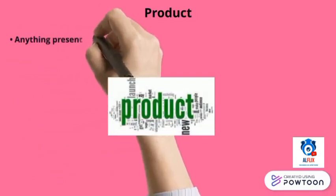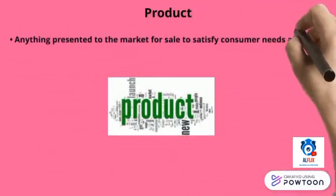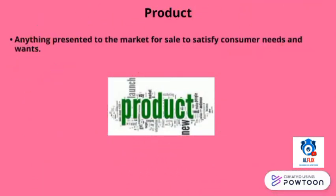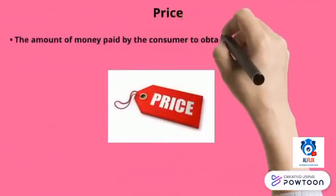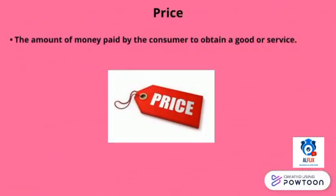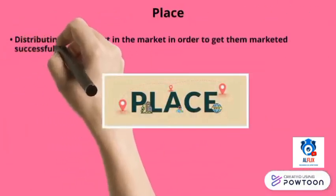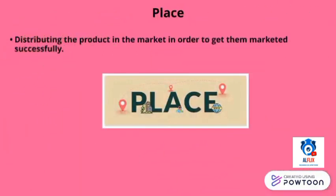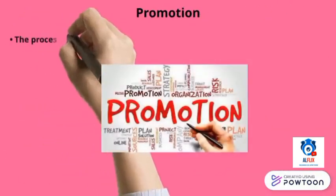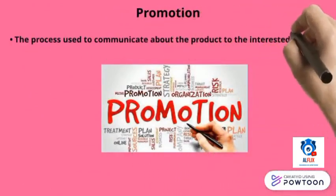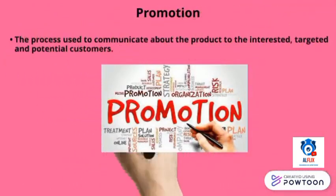Product: anything presented to the market for sale to satisfy consumer needs and wants. Price: the amount of money paid by the consumer to obtain a good or service. Place: distributing the product in the market in order to get them marketed successfully. Promotion: the process used to communicate about the product to interested, targeted, and potential customers.